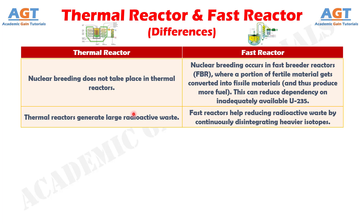Number 6. Thermal reactors generate large radioactive waste. Whereas, fast reactors help reduce radioactive waste by continuously disintegrating heavier isotopes.